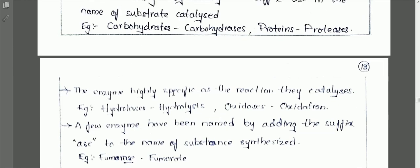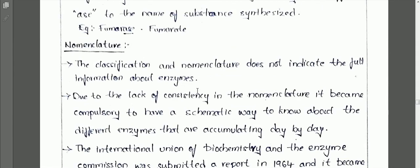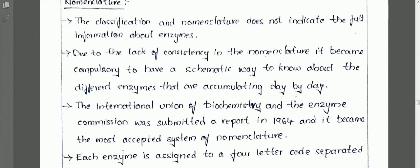For example, any enzyme which acts on carbohydrates: the substrate name 'carbohydrate' is taken, and the suffix '-ase' is added at the end. All enzymes which act on carbohydrates are collectively called carbohydrases.